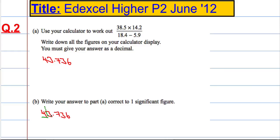If I look at the 3, do I round it up or do I round it off? 3 is below 5. So 43.736 to one significant figure is approximately 40.